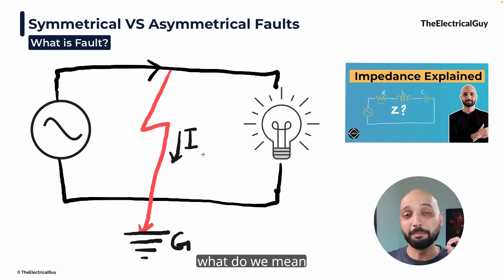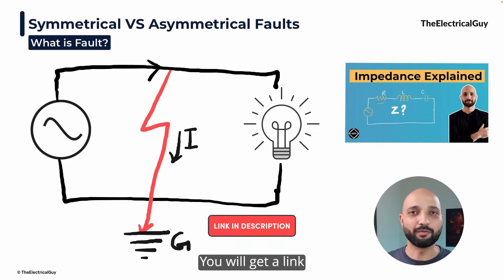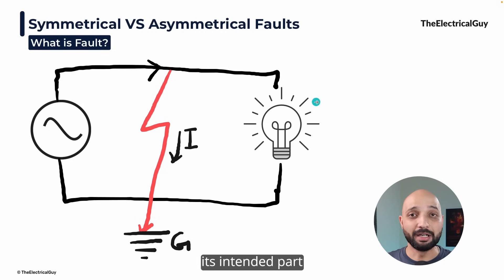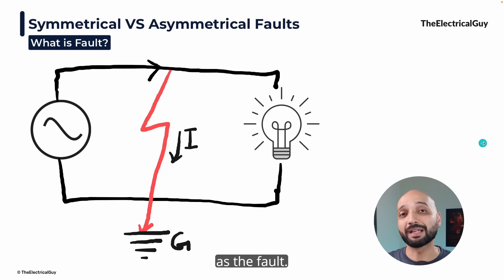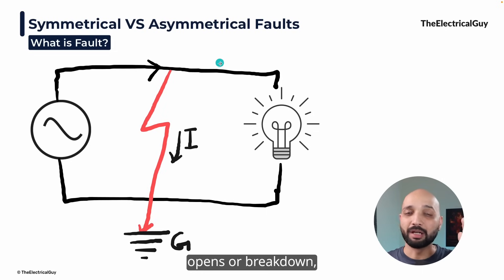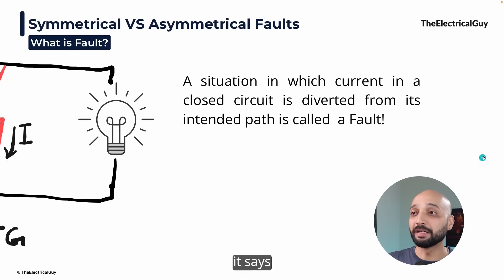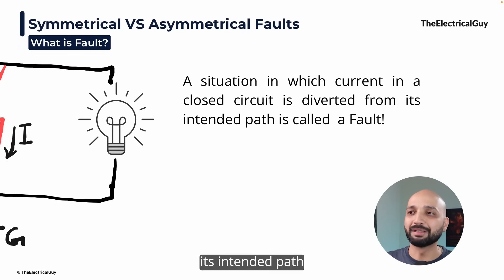If you don't know what we mean by impedance, I have a very simple and easy-to-understand video on that — you'll get a link down in the description. So whenever current diverts from its intended path, it's what we refer to as the fault. Even if the conductor opens or breaks down and the current stops flowing through that, that is also a fault condition. A simple definition of fault: a situation in which current in a closed circuit is diverted from its intended path is called a fault.